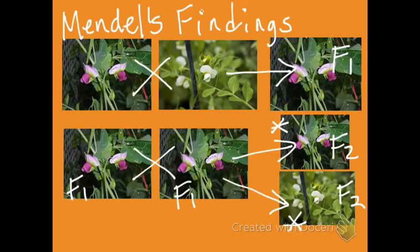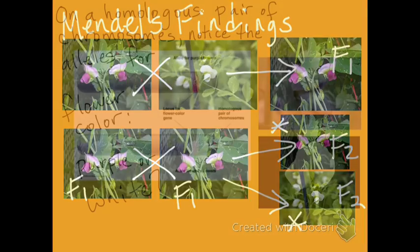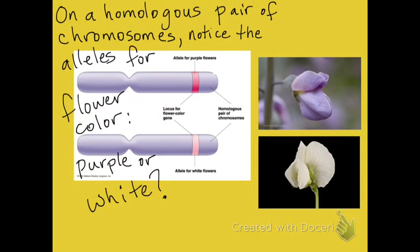Here we have dominant and recessive. On a homologous pair of chromosomes, notice the alleles for flower color — here we have an allele for purple and an allele for white colored flower.